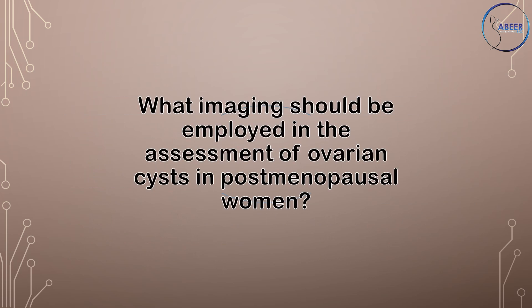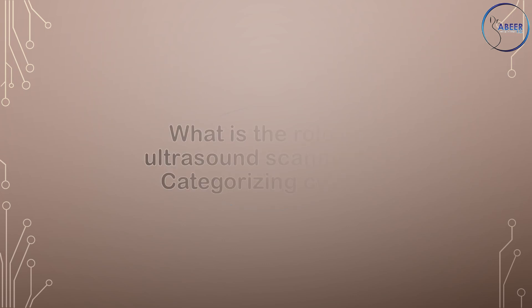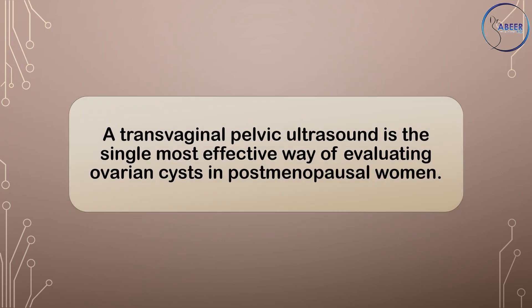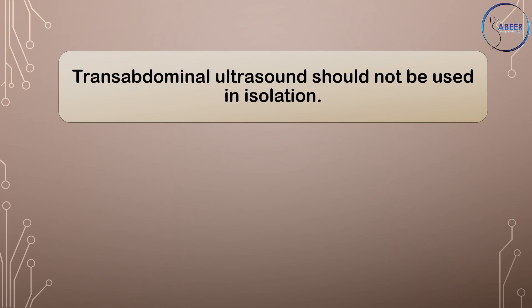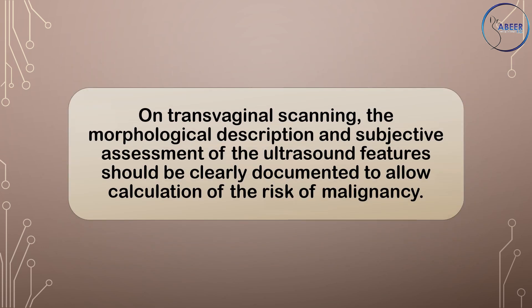What imaging should be employed in the assessment of ovarian cysts in postmenopausal women? A transvaginal pelvic ultrasound is the single most effective way of evaluating ovarian cysts in postmenopausal women. Transabdominal ultrasound should not be used in isolation; it should be used to provide supplementary information to transvaginal ultrasound, particularly when an ovarian cyst is large or beyond the field of view. The morphological description and subjective assessment of ultrasound features should be clearly documented to allow calculation of the risk of malignancy.